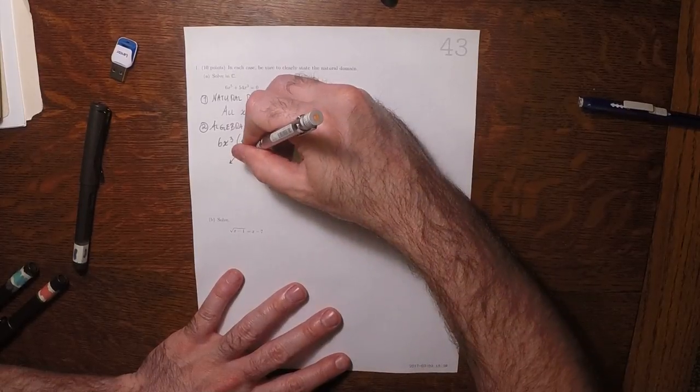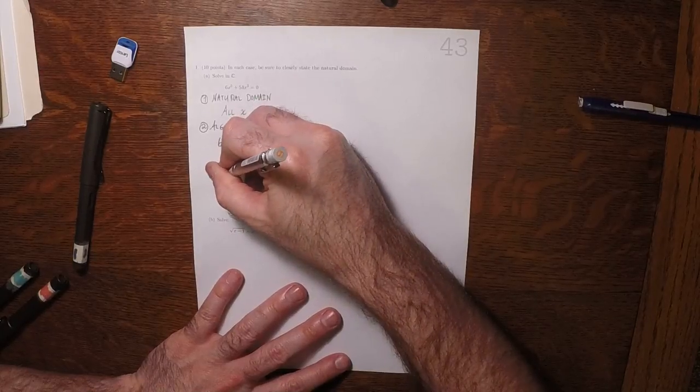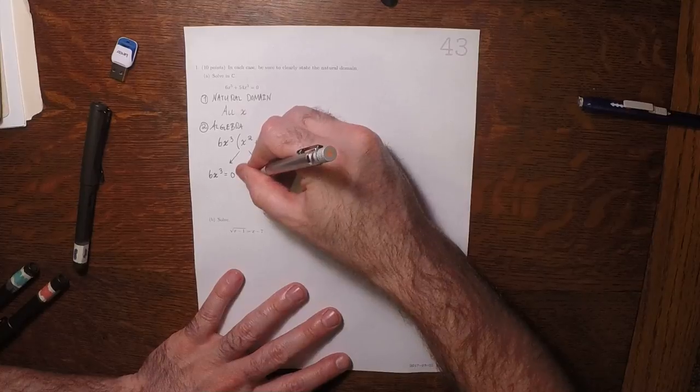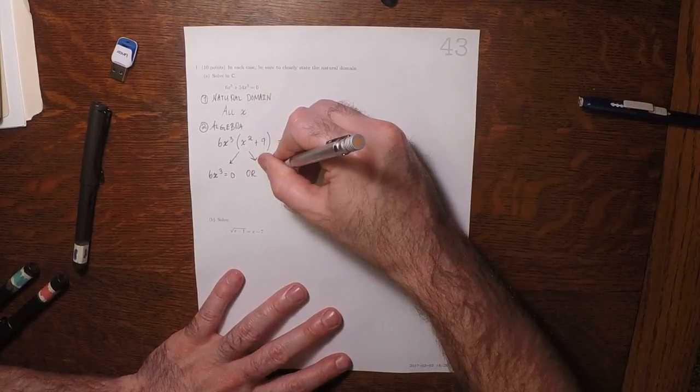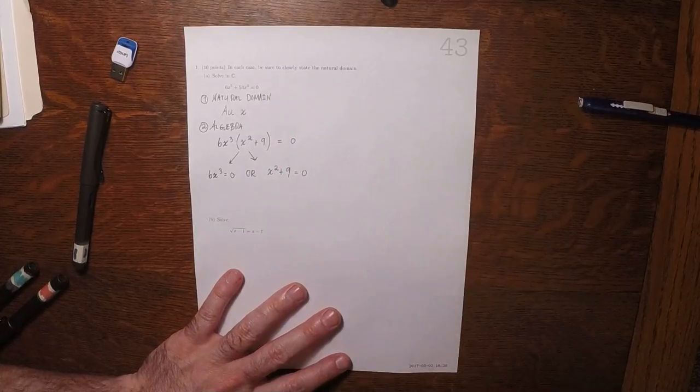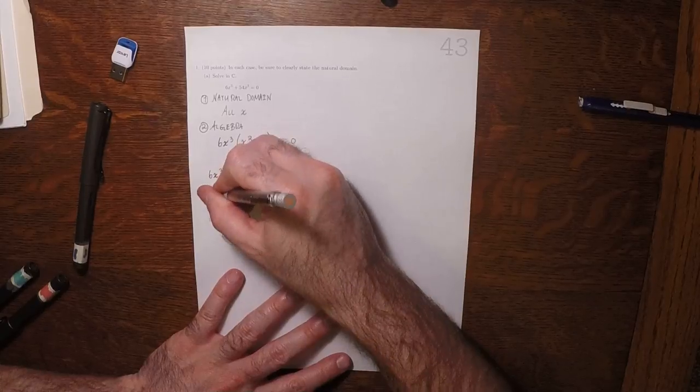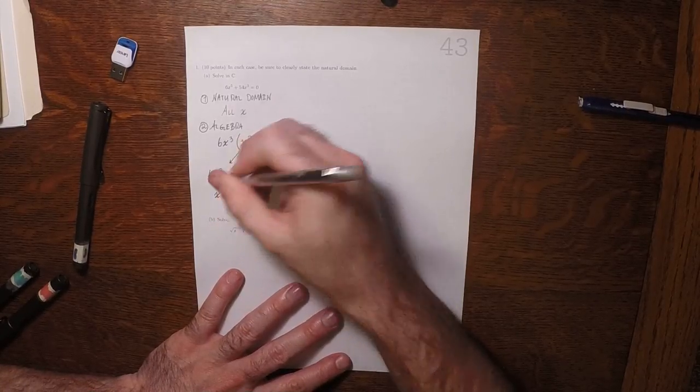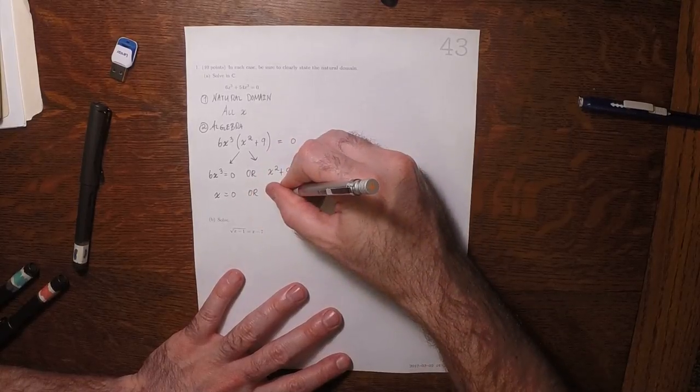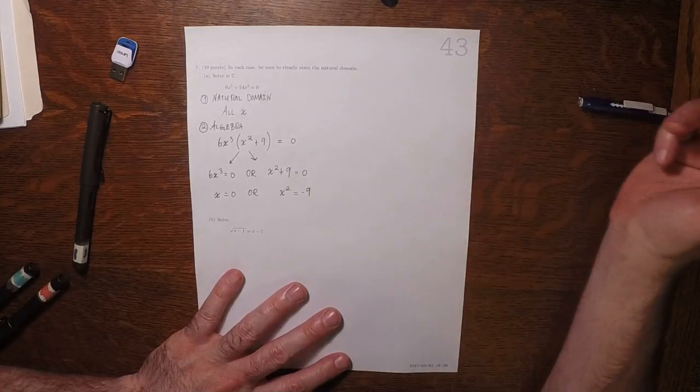Because that's the product of two things equal to 0, the possibilities split. Either 6x cubed is 0, or x squared plus 9 is equal to 0. So for the first one, the only possibility is that x is 0. Or for the other one, x squared could be negative 9.